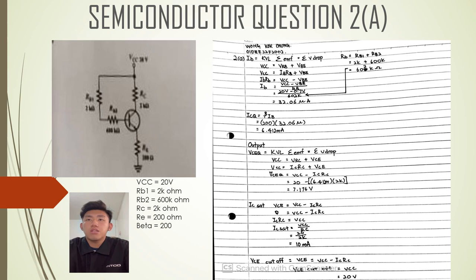ICZ equals VCC divided by RC, which is 20 divided by 2K equals 10 milliampere. VCE cutoff equals VCC, which is 20V.